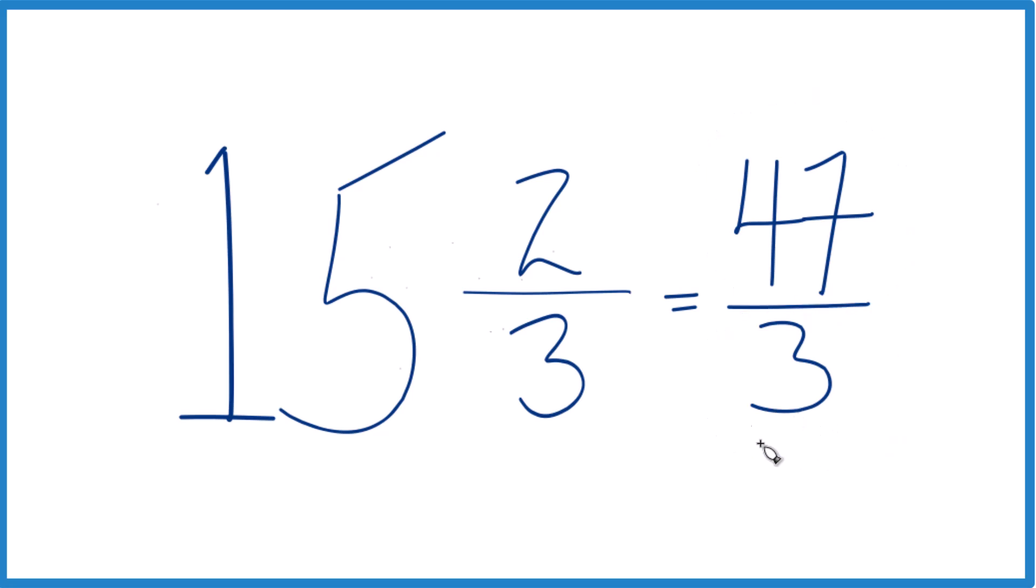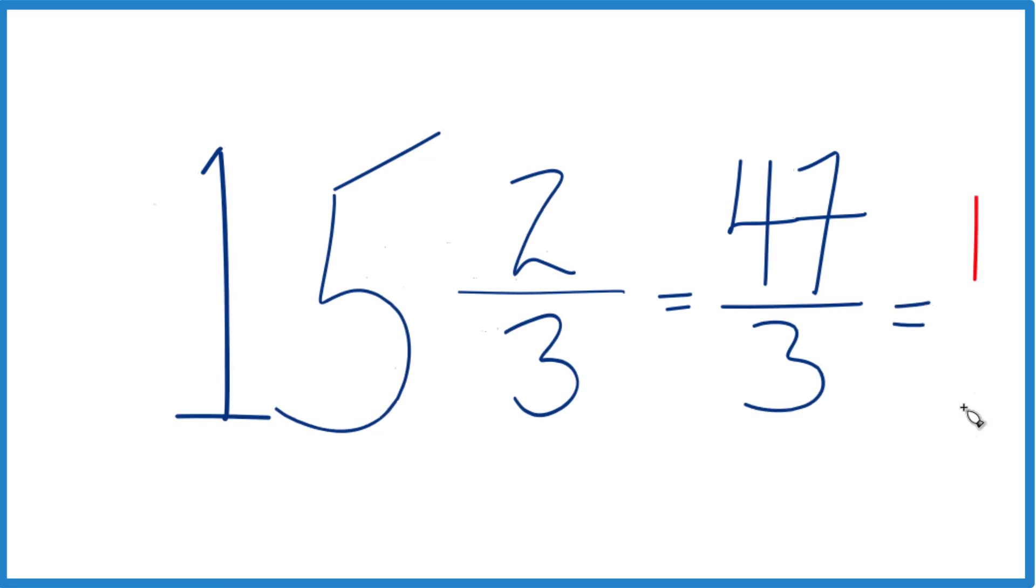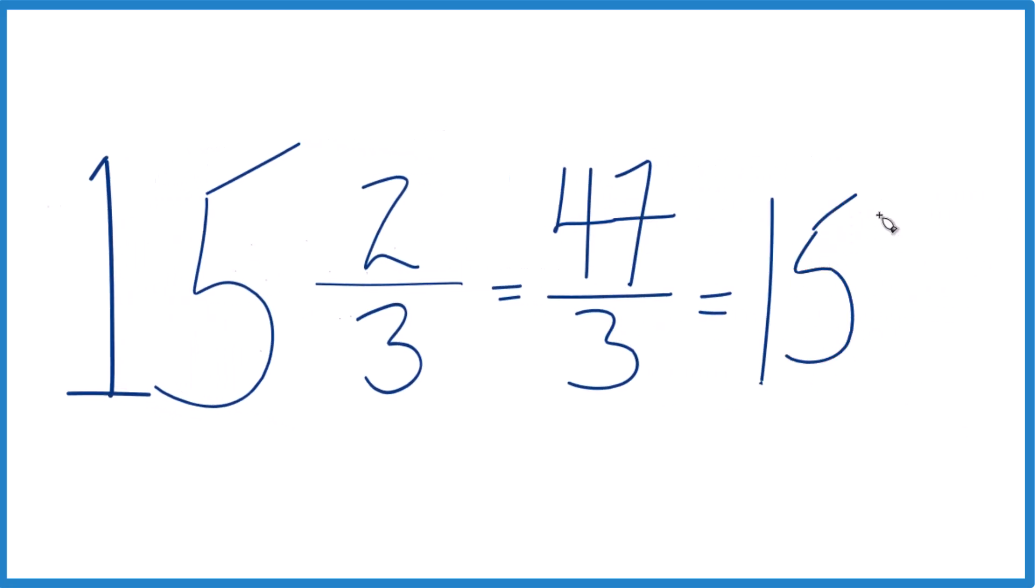You can even check your work here. 3 goes into 47, 15 times 3, that's 45, and we just have 2 left over. Bring that 3 across, and we get 15 and two-thirds.